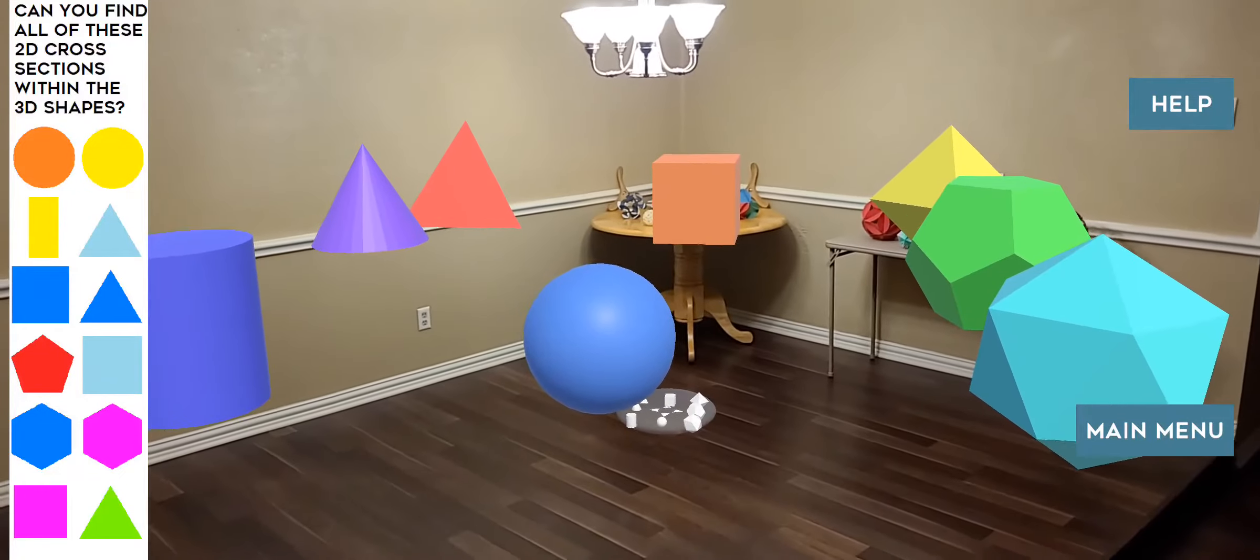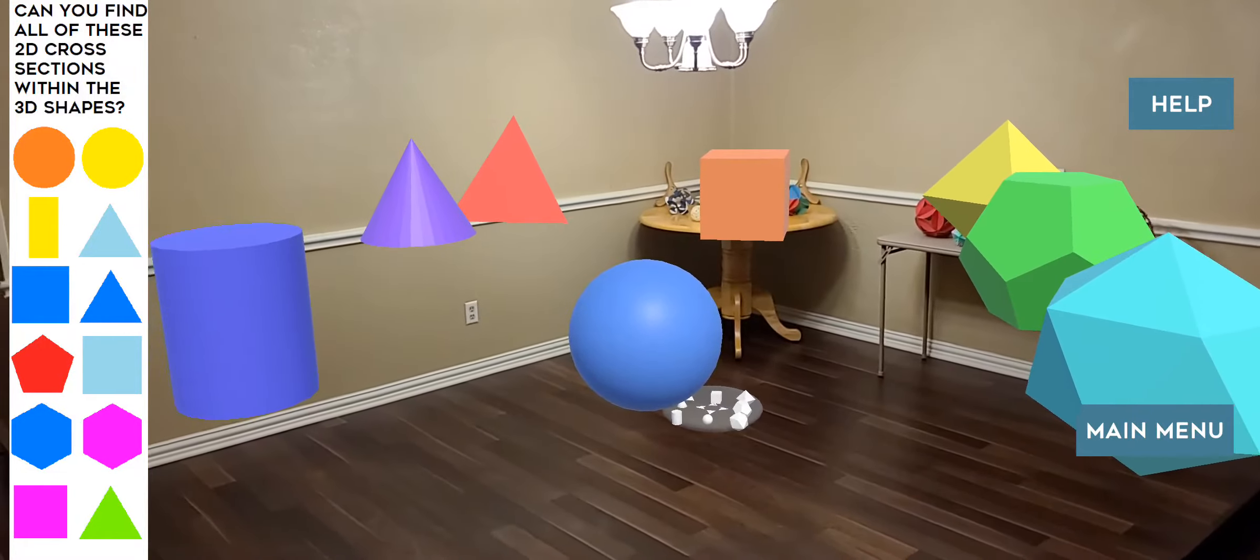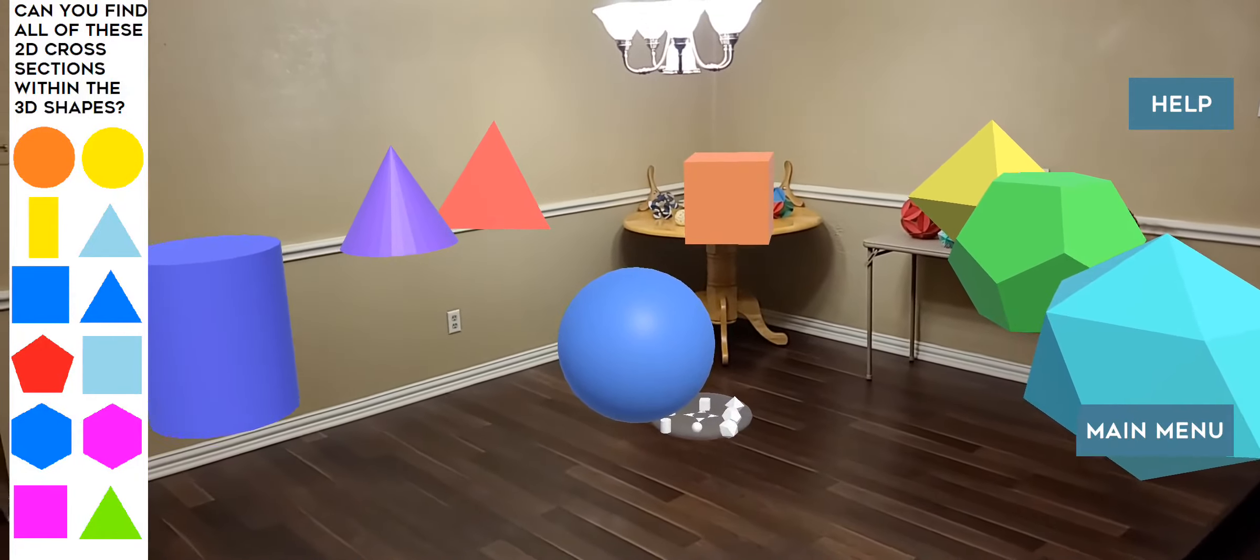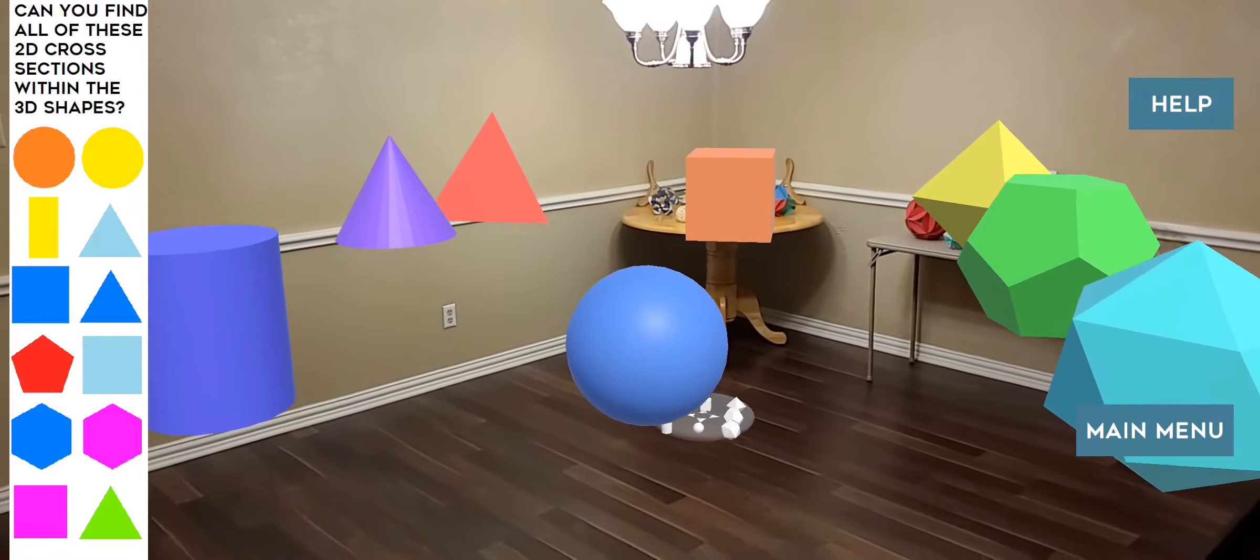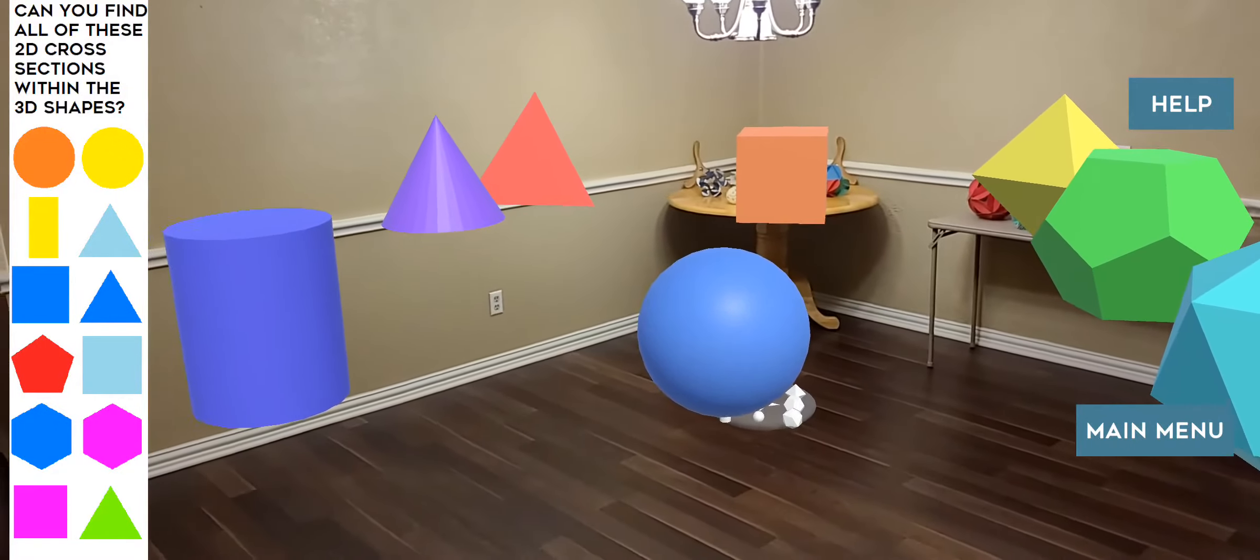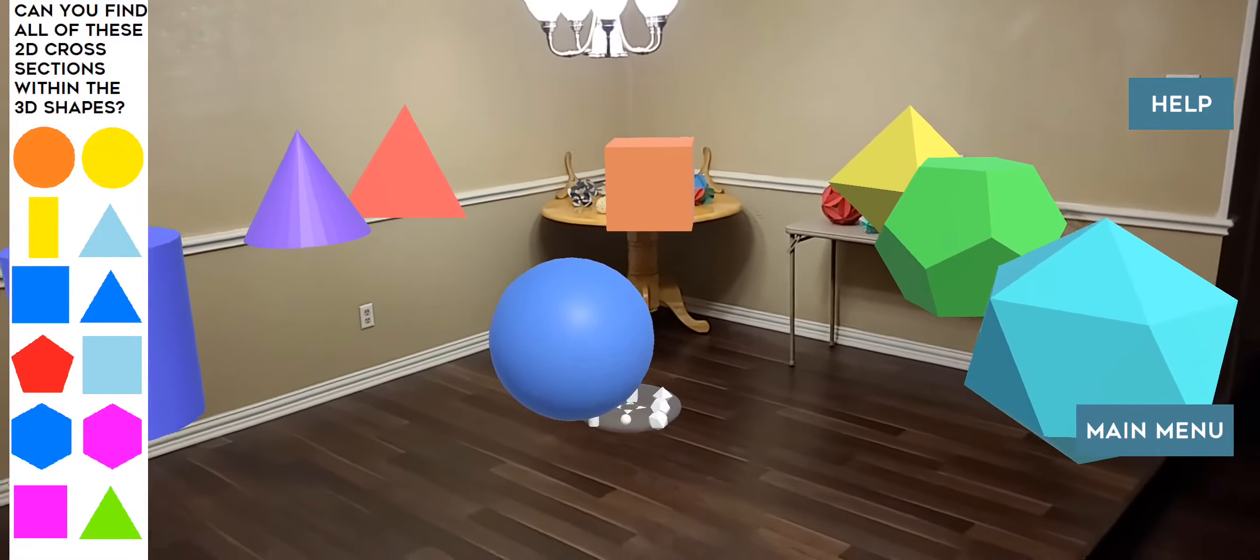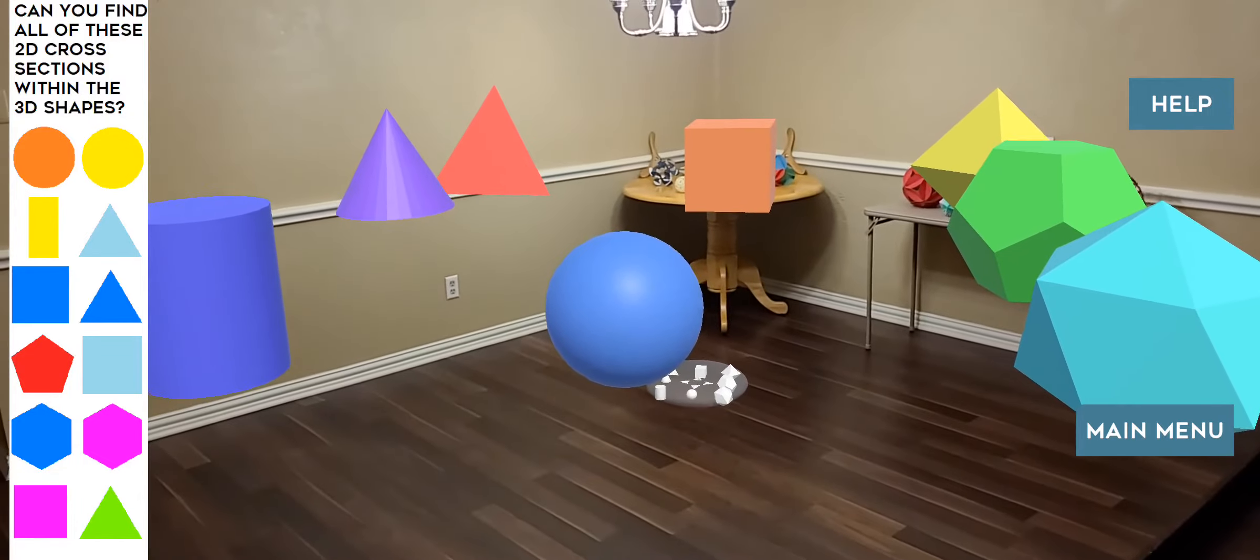I originally envisioned the Discover Shapes mode more as a sequence of challenges. But I do like this mode as it is, where you see a lot of objects at once and you kind of have to figure out which 2D cross-section can be found in which 3D object. Now some are very simple.